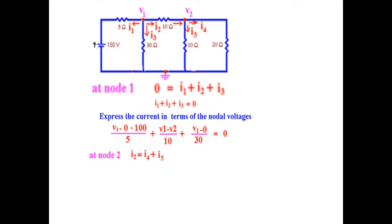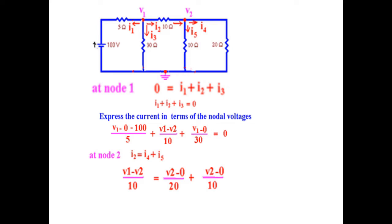Same way we will write the voltage equation for node 2. I2 is again the same I2 coming from V1 to V2, so I2 is V1 minus V2 divided by the 10 ohm resistance. I4 is coming from V2 to 0, so V2 minus 0 divided by 20 ohm resistance. Plus for I5, again V2 minus 0 divided by 10 ohm resistance. These are the two equations in terms of voltage, and by solving these two equations we can find the value of V1 and V2.